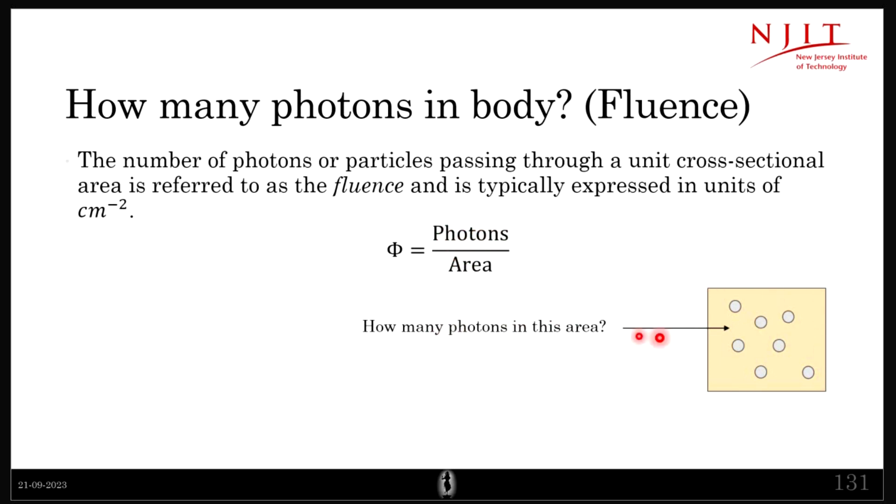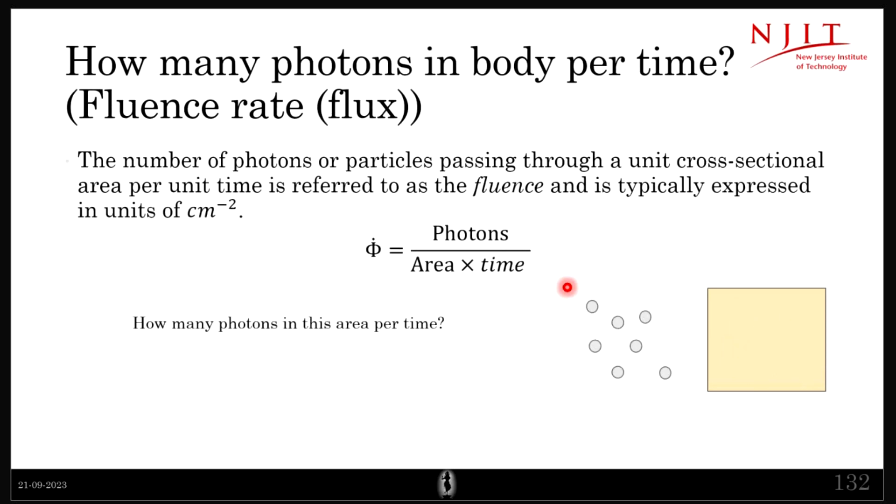But usually what we measure is flux. That is, how many photons are there in a particular area at a particular time, or with respect to time. This is like the speed of fluence - that's a fluence rate, and that's denoted by φ dot.